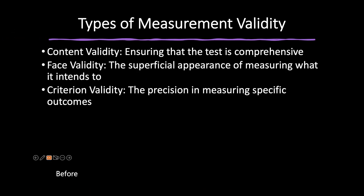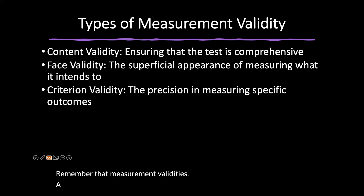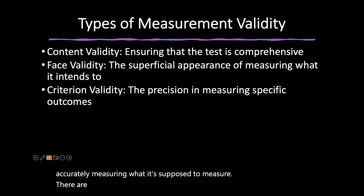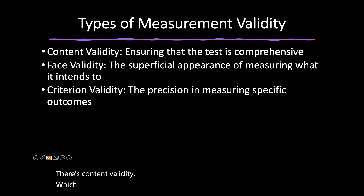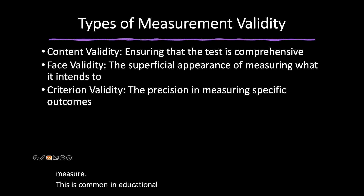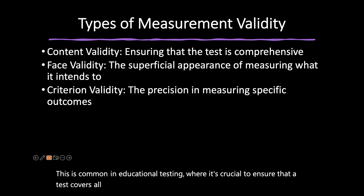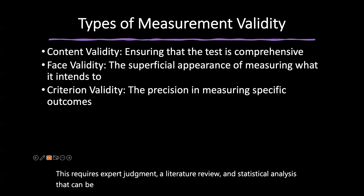Before continuing on construct validity, let's go over the four primary types of measurement validity. Content validity assesses whether the test adequately and comprehensively represents the domain it aims to measure — common in educational testing. It requires expert judgment, literature review, and statistical analyses. Overlooking important aspects or including irrelevant content can undermine content validity. Face validity is the subjective judgment of whether the test appears at face value to measure what it's intended to measure, often used in preliminary stages of test development, though it can sometimes be misleading.